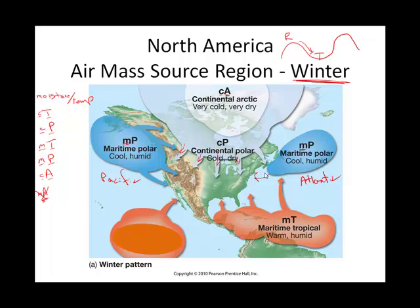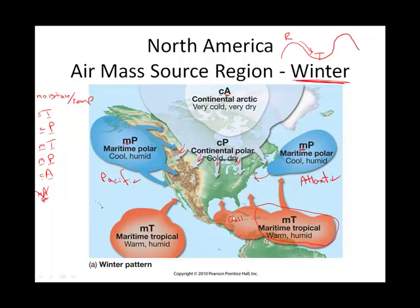Then we get to our maritime tropical air masses. We actually have two or three source regions if you count the Gulf of Mexico as a little bit different from the Atlantic. Maritime meaning moist, so it's going to be over a large body of water. The Gulf is kind of a source region for maritime tropical air masses, and here would be the Atlantic. Another source of maritime tropical air masses would be over here in the Pacific.